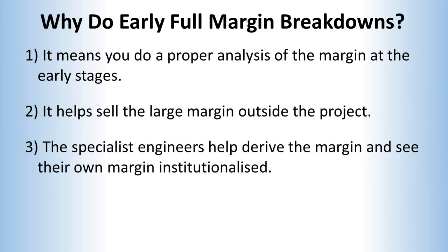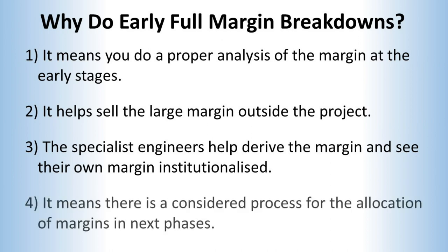That covers the first of the two problems we identified. We can also address the second problem, as we have a process that gives the specialist engineers in the project involvement in the margin assessment and a buy-in to the outcome. And finally, it means there is a longer, more considered process to establishing the final system-level allocation of margins that everyone on the project can see and contribute to as the design evolves. It is when specialist engineers can see they have a degree of control over the margins in their area that they are willing to unhide their assessment of the uncertainties in their estimates.